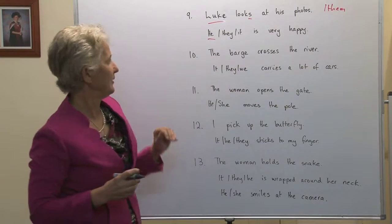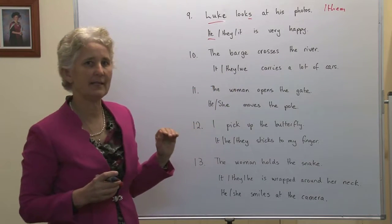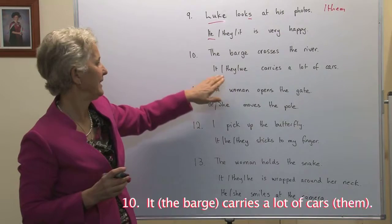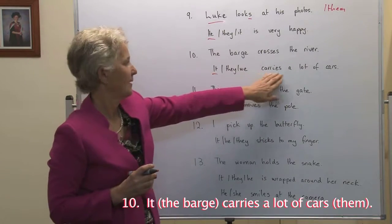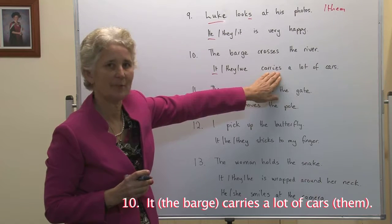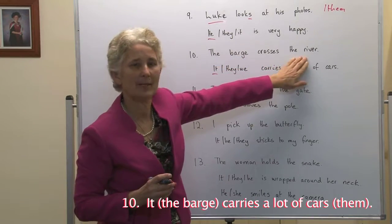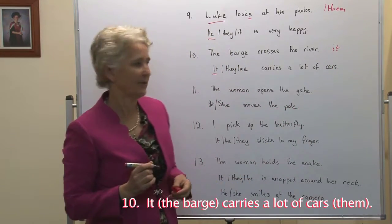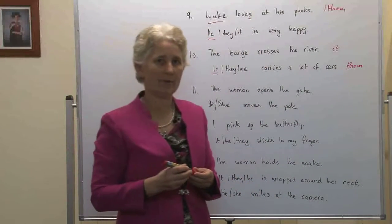Number ten: The barge crosses the river. It, they or we — it carries a lot of cars. The barge, third person, singular. We need the pronoun it — it carries a lot of cars. Once again, crosses and carries — we've got the s in the third person simple present tense. If we were replacing the river, we would also have it. It carries a lot of cars. We would replace the cars, an object with plural, them.